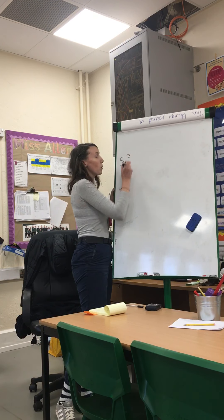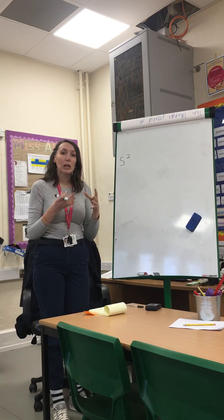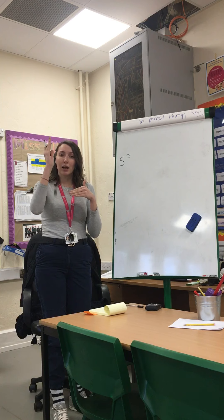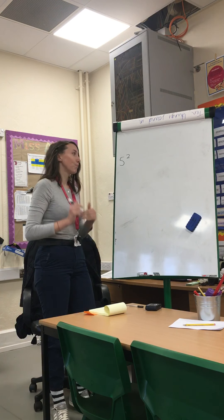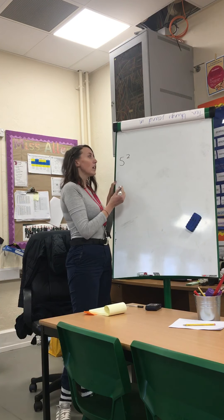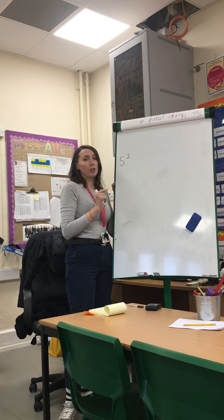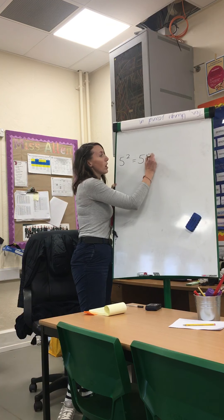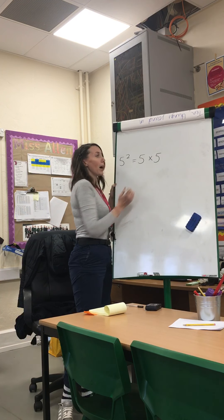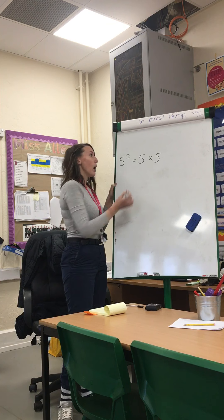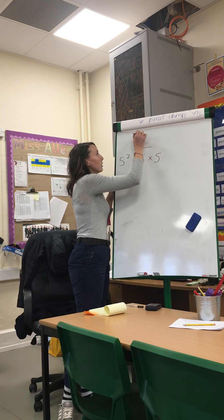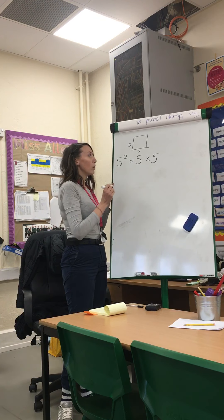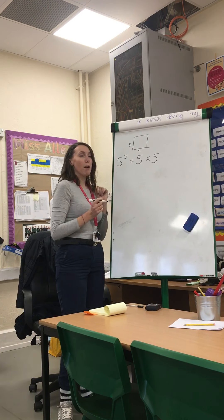When a number is squared — so for example, if we have 5 squared — we've done this before and we use the cubes to make the numbers that are squares, and we know that squares have got sides that are the same length. Lots of us think that might mean 5 times 2, but actually, hopefully you can all remember that it means we are timesing the number by itself. So we would have 5 by 5.